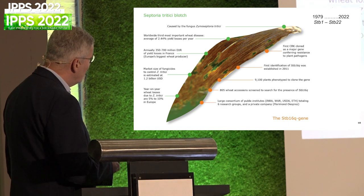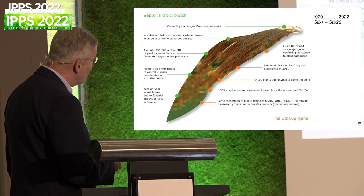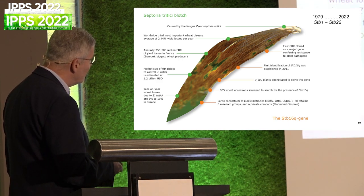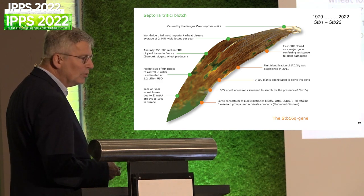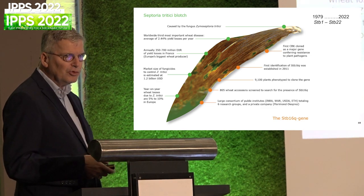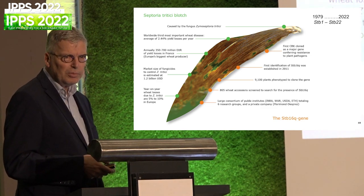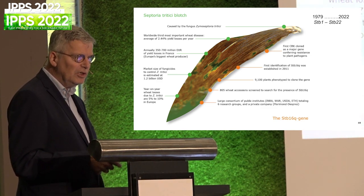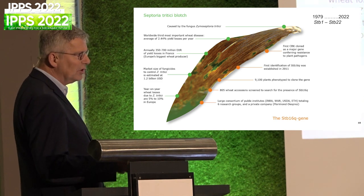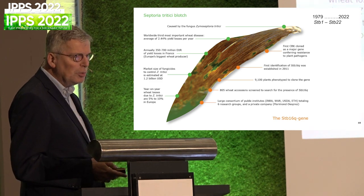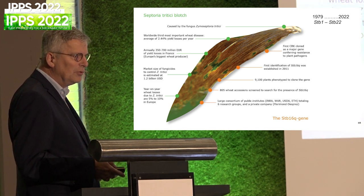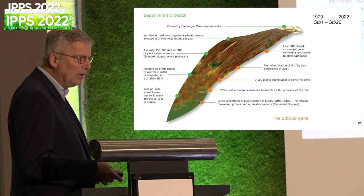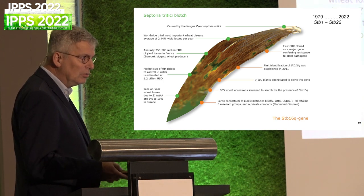I also put down this number: to eventually clone this gene, we had to phenotype close to 10,000 plants - seedlings and adult plants. That gives you a sense of how much phenotyping is involved to map and to clone genes.